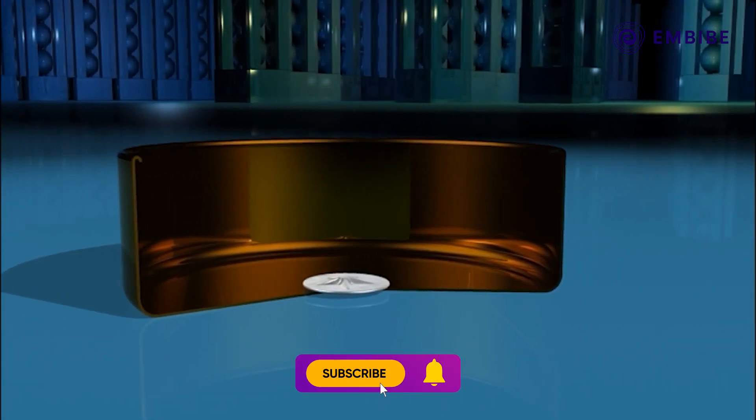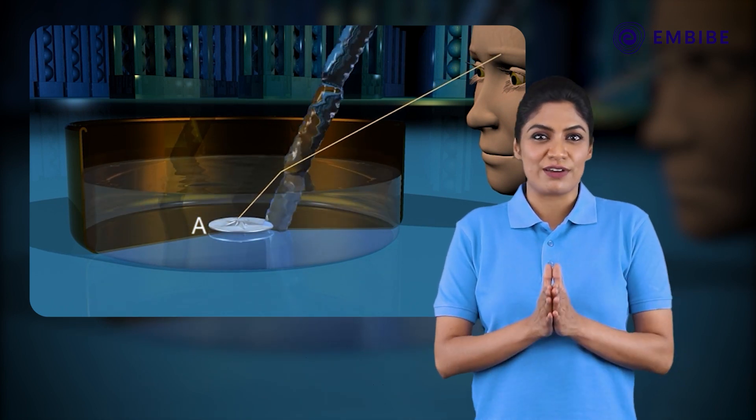In the coin experiment, light travels in a straight line. When there is no water in the vessel, the coin was not visible at position A. On adding water, the ray of light changed its direction at the water surface and reached the eye, and the coin appeared slightly higher than its original position.